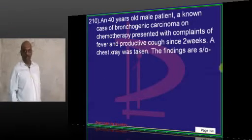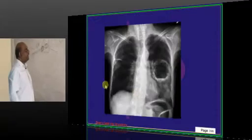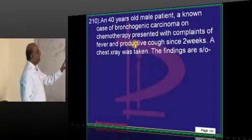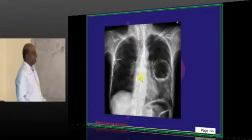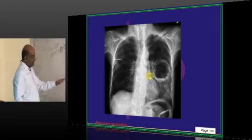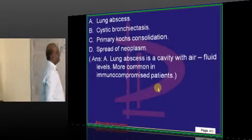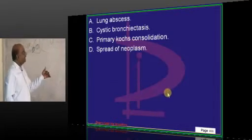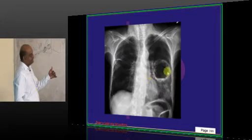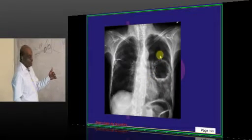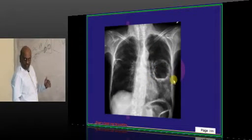A 40-year-old male, a known case of bronchogenic carcinoma on chemotherapy with complaints of fever and productive coughs since 2 weeks. A chest X-ray is being shown. What is the important finding? This is a lung abscess classically. With a spherical lesion, with an air fluid level.